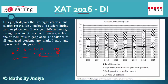If the 50th and 51st salaries are both X, then the median is simply X. If the 50th salary is X and the 51st is Y, then the median is the average of these two. So the median is a value which divides the data into two equal halves.